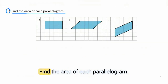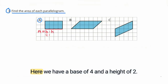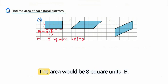Problem 3: Find the area of each parallelogram. To find the area, you multiply base times height. For figure A, we have a base of 4 and a height of 2, so 4 times 2 is 8. The area would be 8 square units.